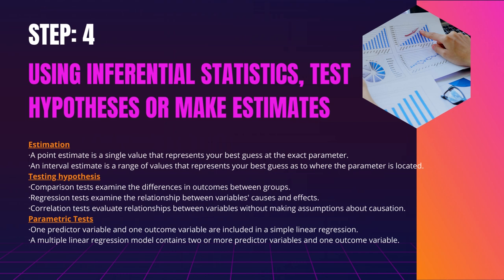The z- and t-tests are classified into subtypes based on the number and type of samples used, as well as the hypotheses. Use a one-sample test if you only have one sample to compare to a population mean. Use a dependent (paired) samples test if you have paired measurements within a within-subjects design. Use an independent (unpaired) samples test if you have completely separate measurements from two unmatched groups in a between-subjects design. Use a one-tailed test if you expect a difference between groups in a specific direction. Use a two-tailed test if you have no expectations about the direction of a difference between groups.